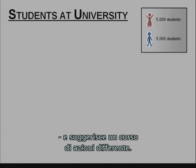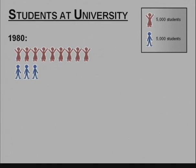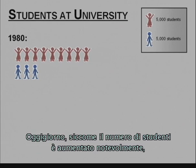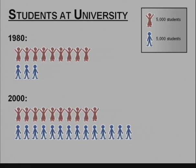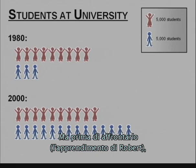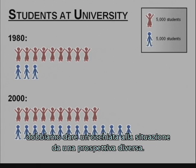The statistics also carry an important message and suggest a different course of action. 20 or 30 years ago, there were mostly Susans at the universities. Nowadays, however, as student intake has increased dramatically, the Roberts now outnumber the Susans. This makes for a considerable problem which is important to tackle for any responsible modern society. But before we deal with Robert's learning, we need to take a look at the situation from a different perspective.